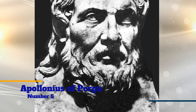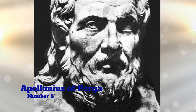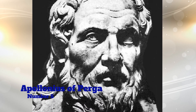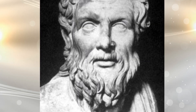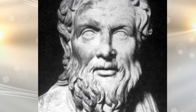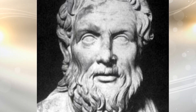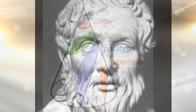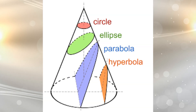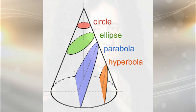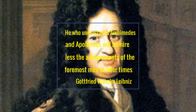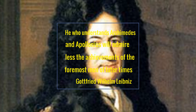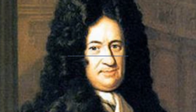Number 5: Apollonius of Perga. Apollonius of Perga was an ancient Greek geometer and astronomer known for his work on conic sections. Beginning from the contributions of Euclid and Archimedes on the topic, he brought them to the state prior to the invention of analytic geometry. His definitions of the terms ellipse, parabola, and hyperbola are the ones in use today. Gottfried Wilhelm Leibniz stated: "He who understands Archimedes and Apollonius will admire less the achievements of the foremost men of later times."